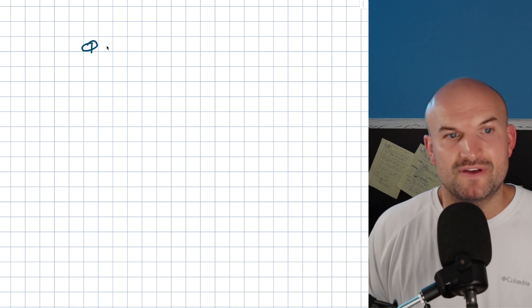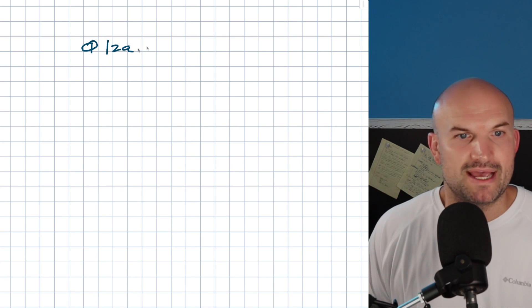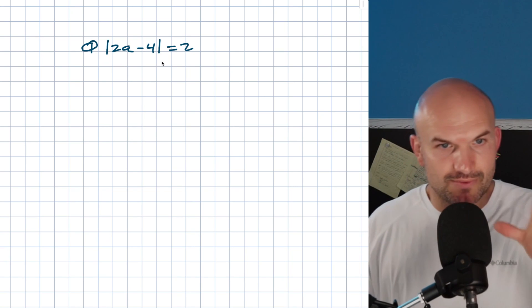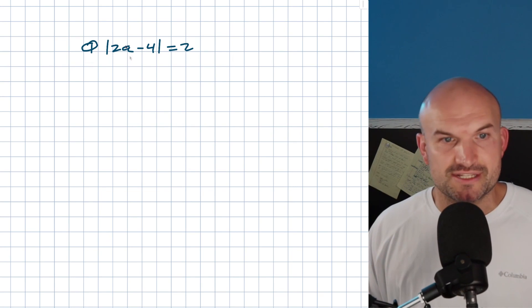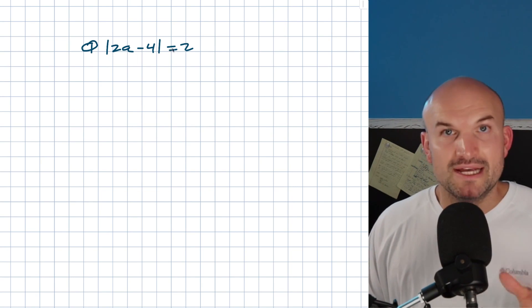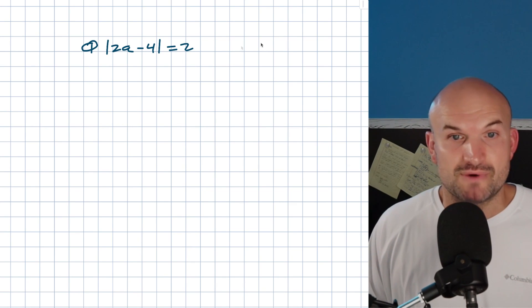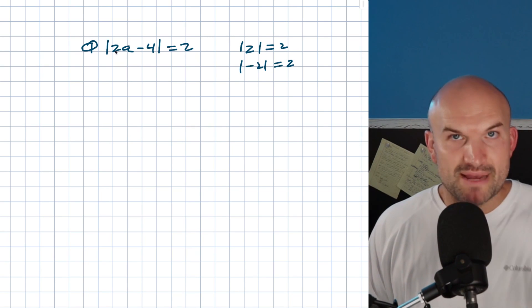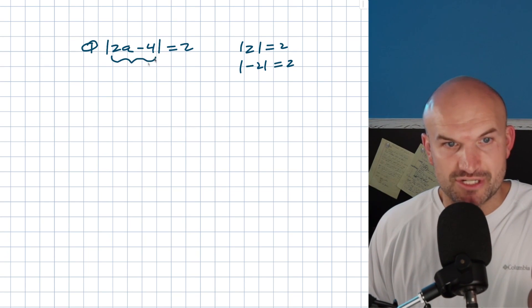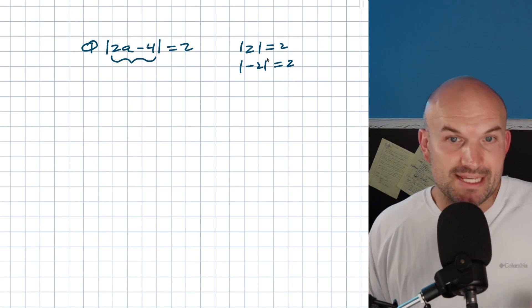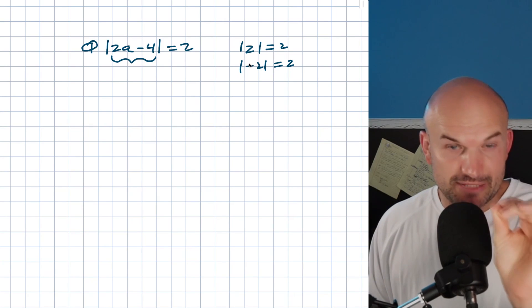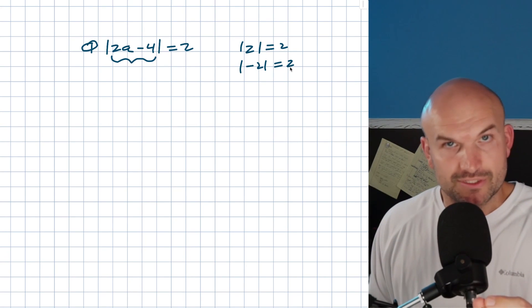The main thing with an absolute value equation — for example, the absolute value of 2a minus 4 equals 2 — is to remember that the absolute value is going to have exactly two cases. The absolute value of 2 equals 2, and the absolute value of negative 2 also equals 2. So whatever is inside, like 2a minus 4, could equal 2 or could equal negative 2, and it'd still be equal to 2.